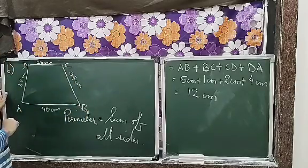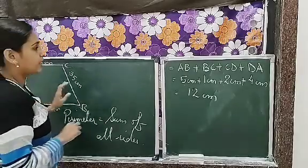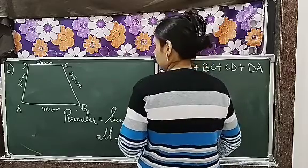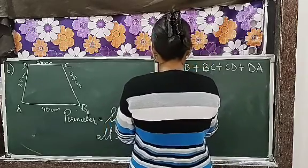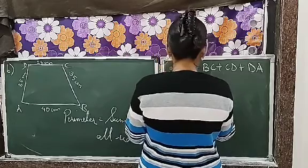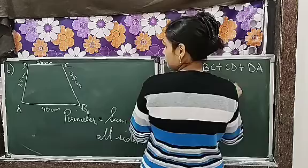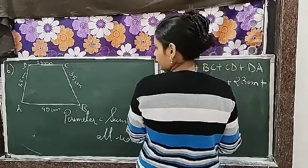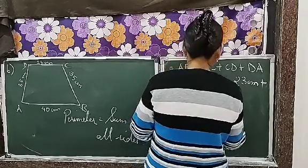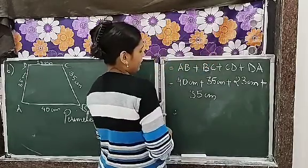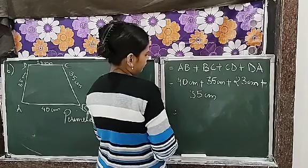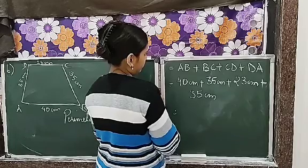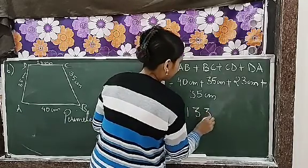That is AB plus BC plus CD plus DA. This time only numbers will change. So the numbers are A is 40 cm, 35 cm, 23 cm. So finding the total, I think it is 133 cm.